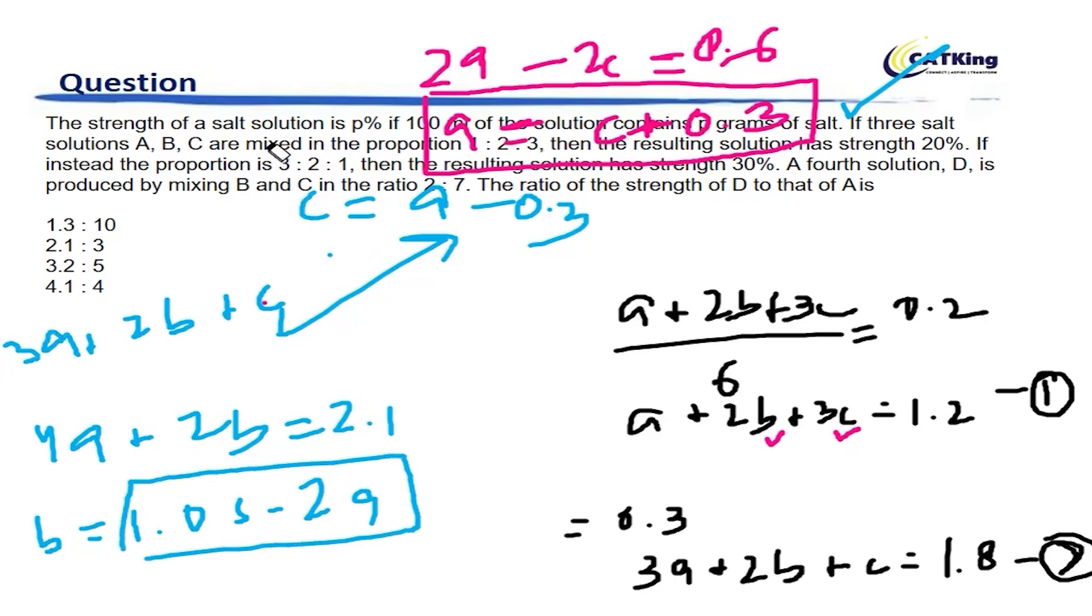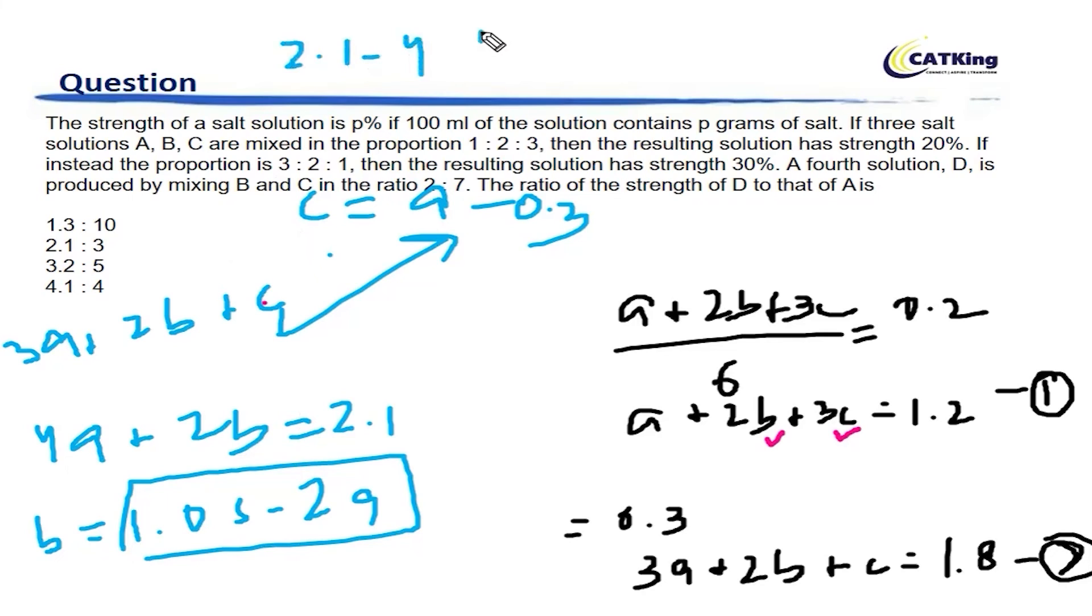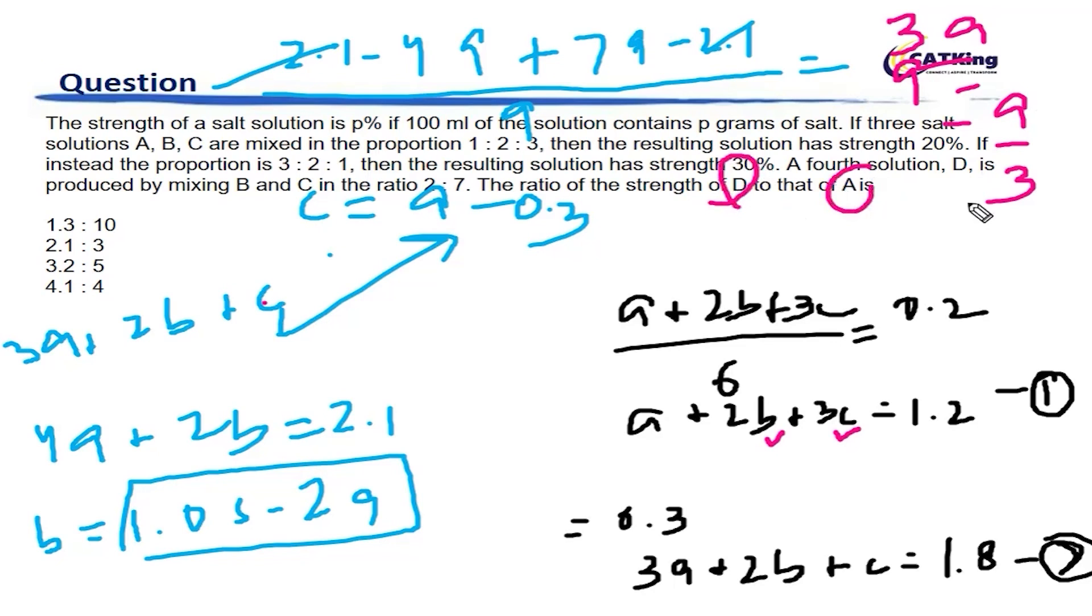Now we have to take B and C in the ratio 2 is to 7 for making D. So let's take B and C in the ratio 2 is to 7. This becomes 2.1 minus 4A plus 7 times A minus 2.1 divided by 9. This becomes 2.1 gets cancelled here. This becomes 3A by 9, so it becomes A by 3. So the strength of D with respect to A is 1 third.